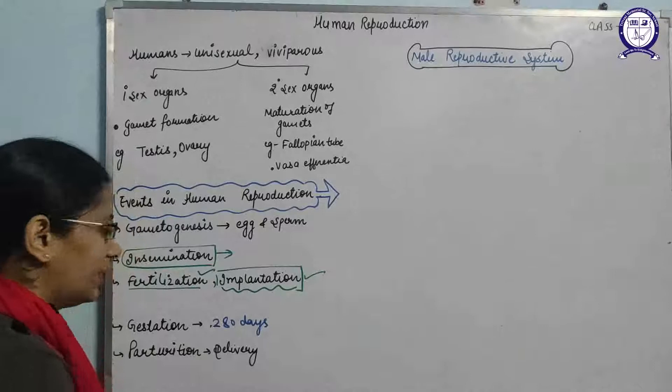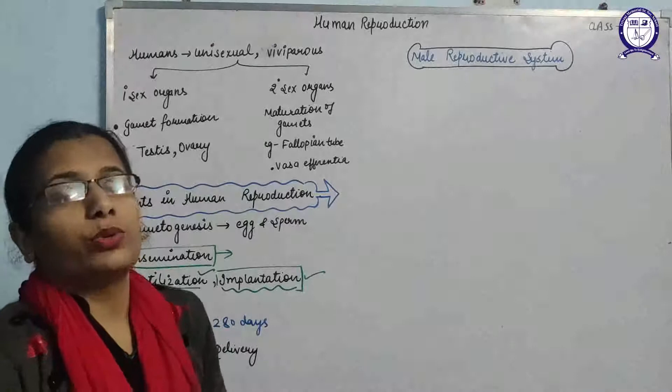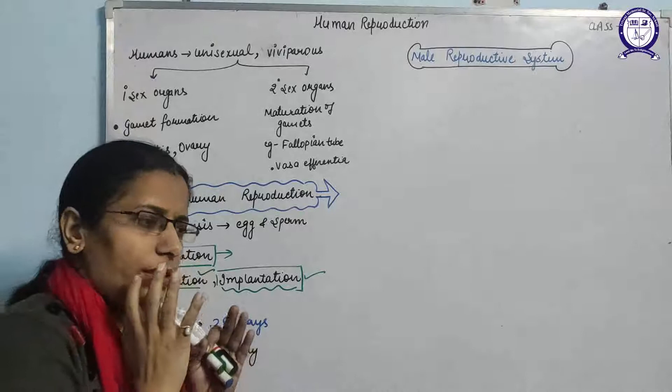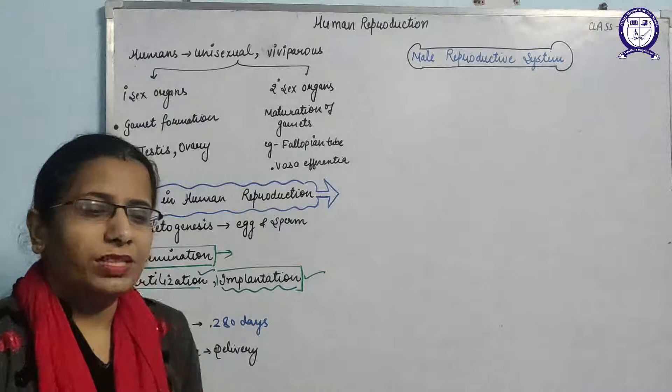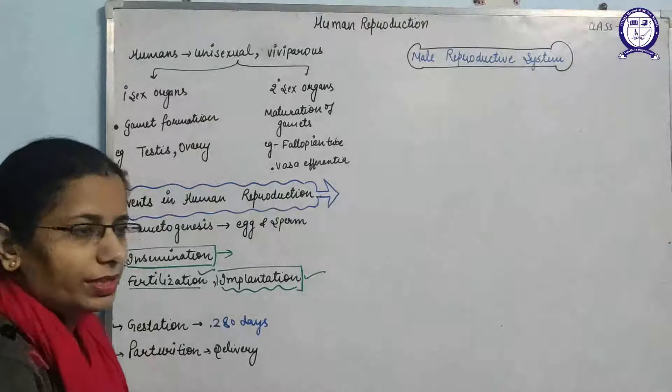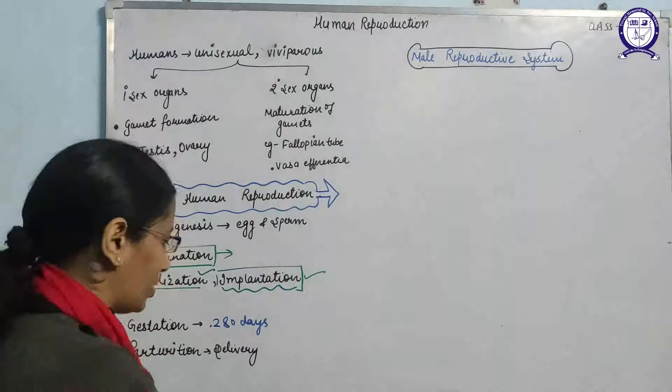After implantation, the gestation period begins. The gestation period is approximately 280 days — about 9 months — from the day of conception to the day of birth. The time period between conception and birth of the fetus is known as the gestation period, also known as the embryo development period. After that, parturition occurs, which is the process of giving birth to the fetus, also known as delivery.